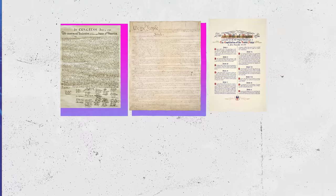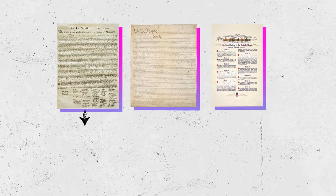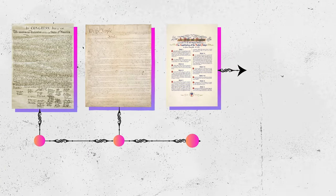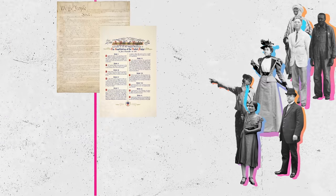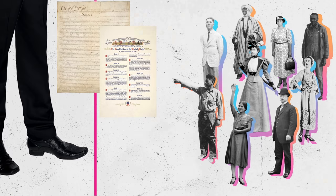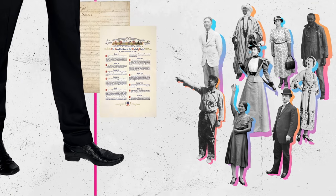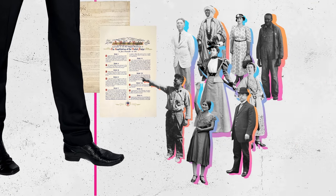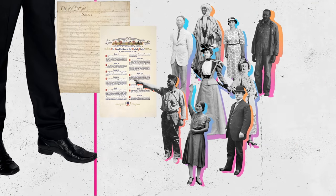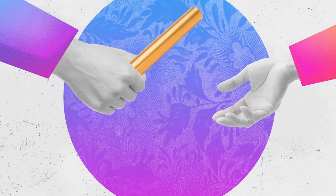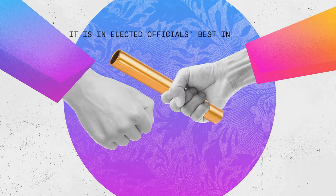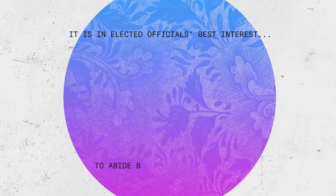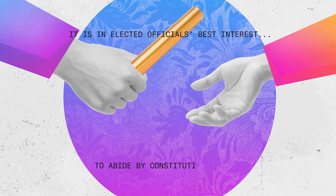Following the revolution, the Americans adopted a constitution and their own Bill of Rights that defined the role of the federal government. Like the English Bill of Rights, the constitution defined what the government could and couldn't do, so that citizens were knowledgeable and equipped to police transgressions from the government. Because of this, elected officials understand that to stay in power or maintain influence beyond their term, it is in their best interest to abide by constitutional rules.